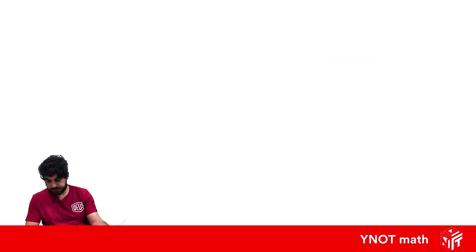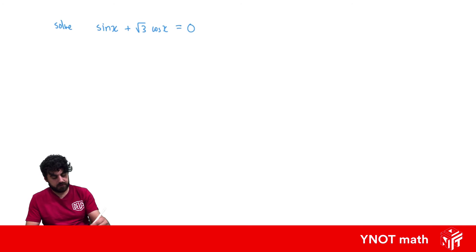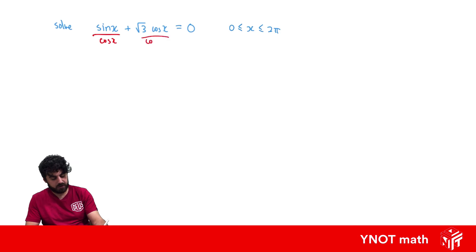Here's another question: we're solving for x when sin x + √3 cos x = 0, with x between 0 and 2π. This is a bit trickier because we have two trigonometric functions being added together, and it would be nice if we only had one trig function to deal with.